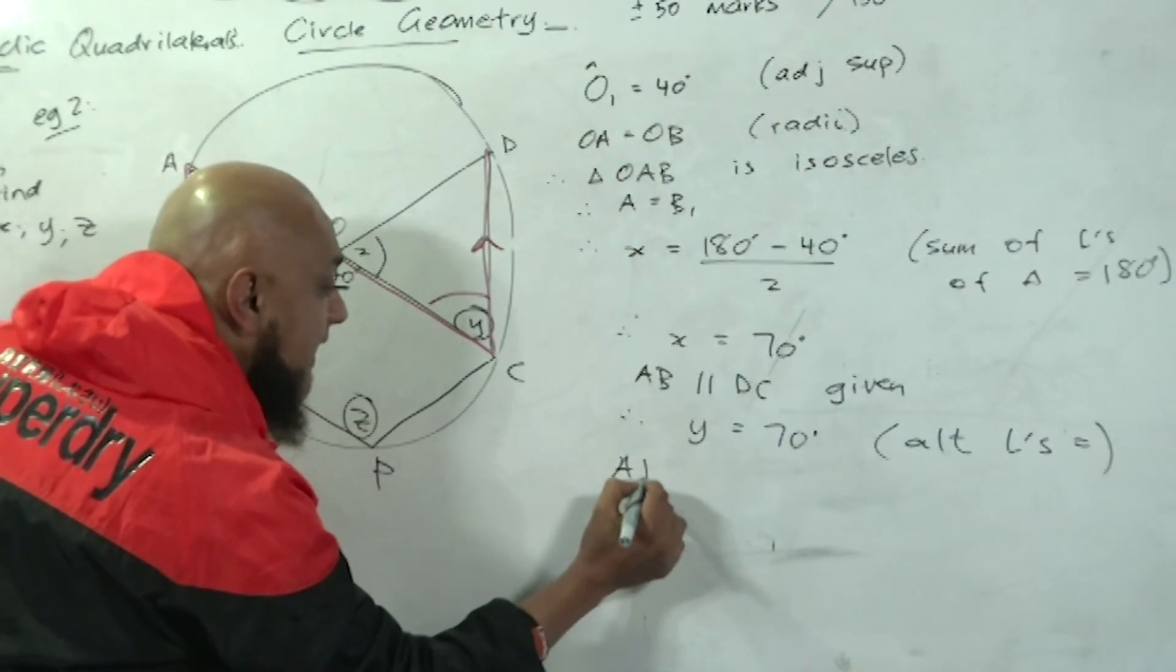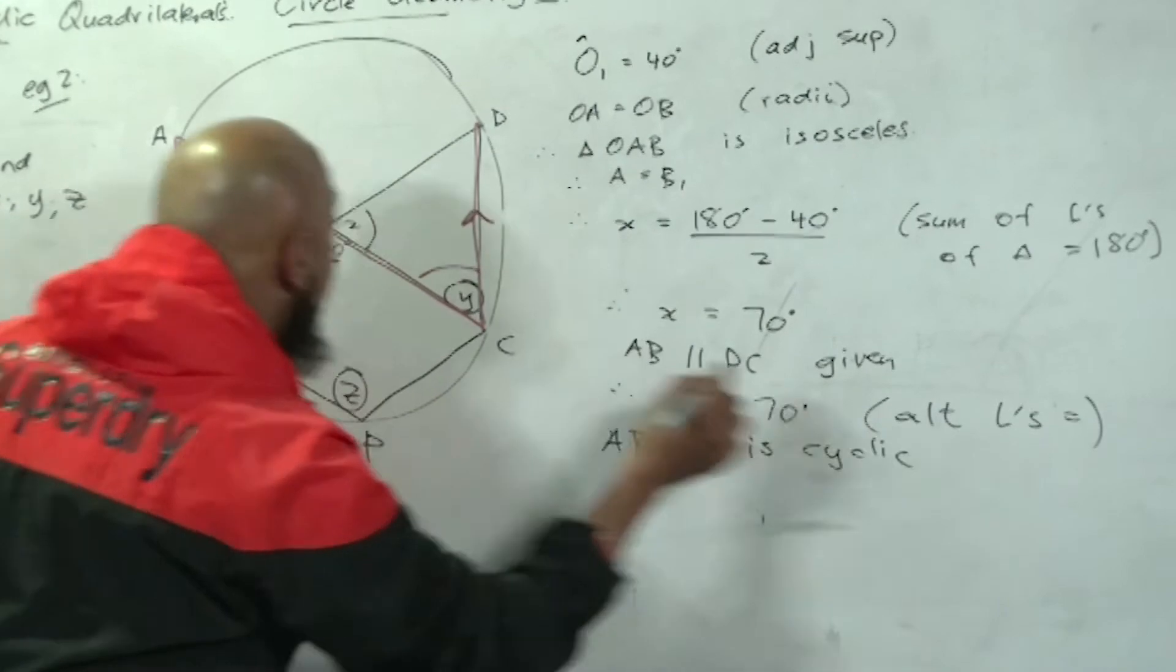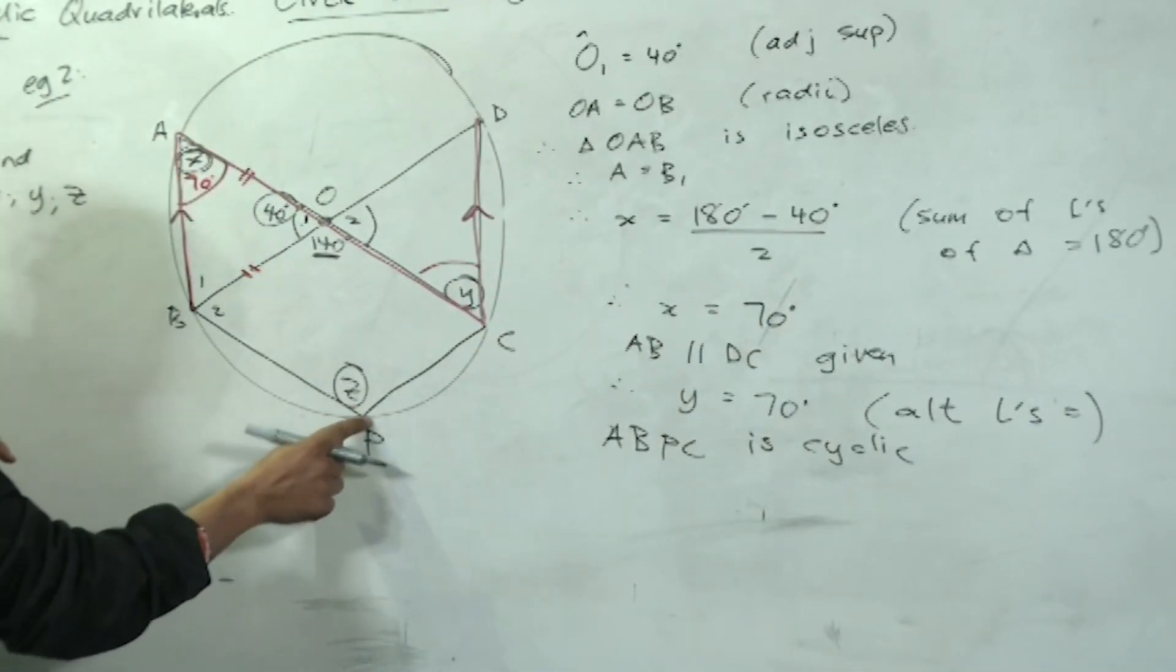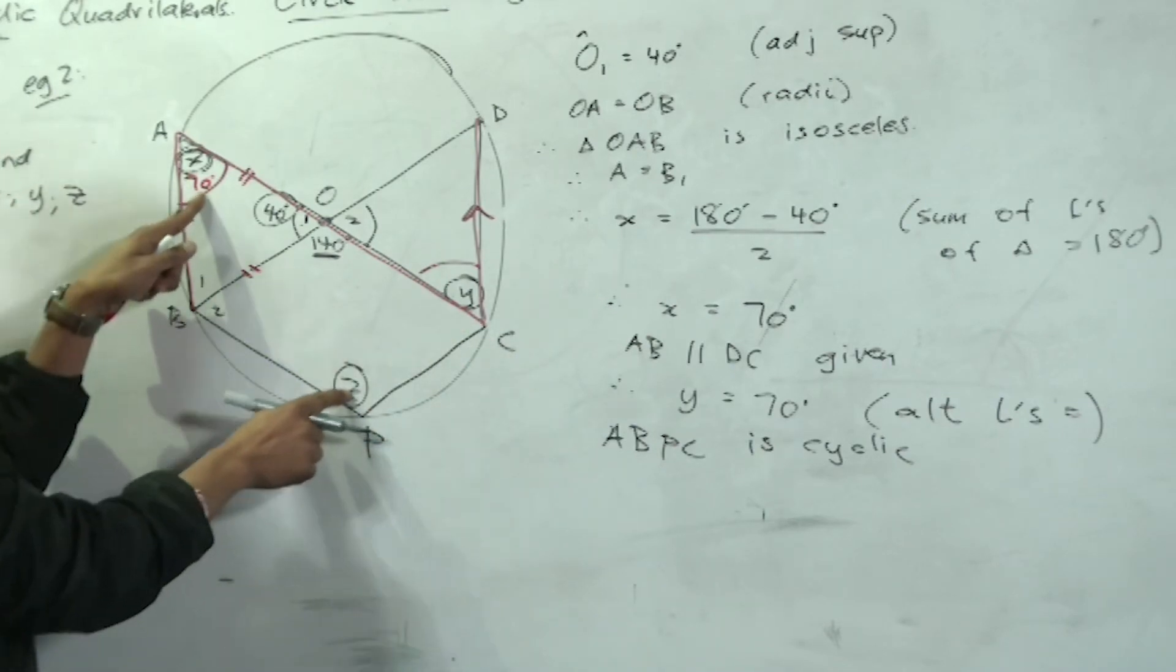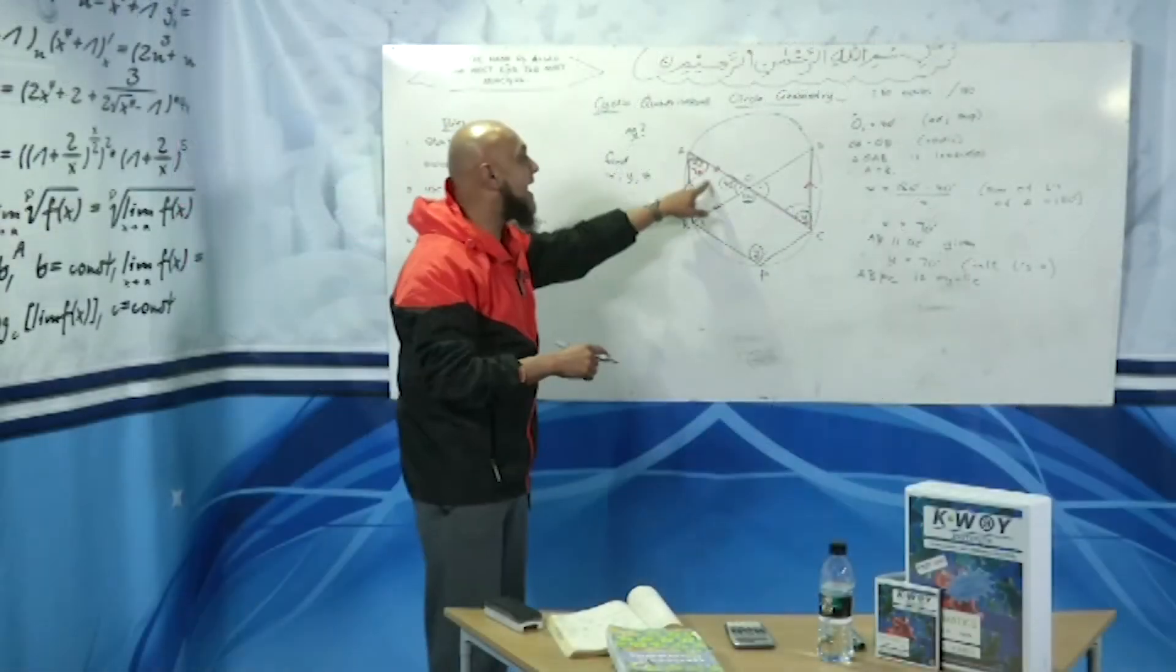Let's now get to z. I also said that ABPC is cyclic. Why? Because A touches circumference, B touches circumference, C touches circumference. What do we know about the opposite angles of a cyclic? Go back to your theorems. The opposite angles—are they equal or are they supplementary? Go and check.